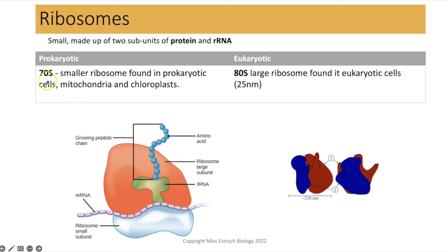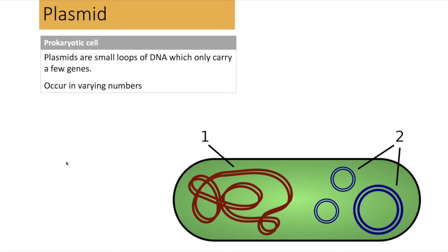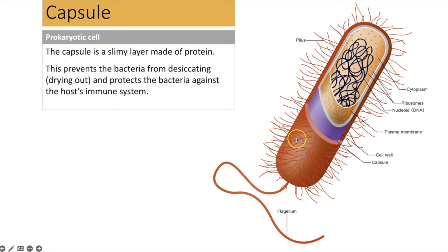Instead of a nucleus, prokaryotic DNA is circular and loose within the cytoplasm. Some prokaryotes contain plasmids — small loops of DNA carrying only a few genes, with varying numbers present. The cell wall is made of a glycoprotein called murein. The slime capsule outside the cell wall is sometimes present; it's made of protein and prevents the bacteria from desiccating, while also protecting against the host's immune system by partially covering the antigens.